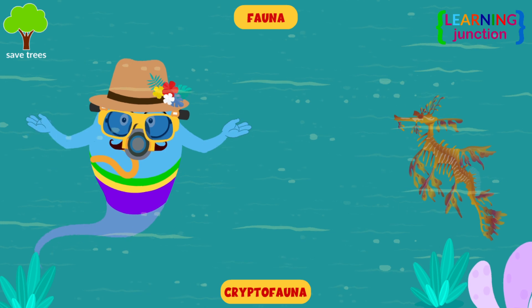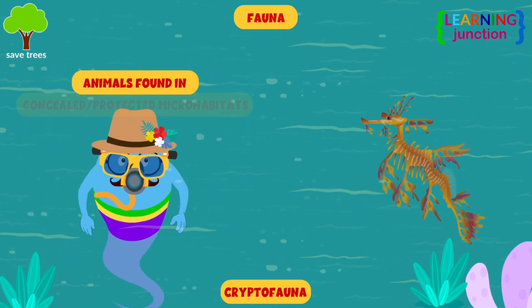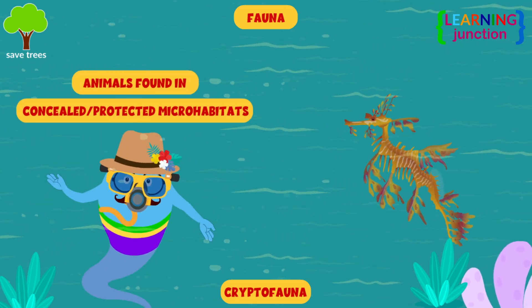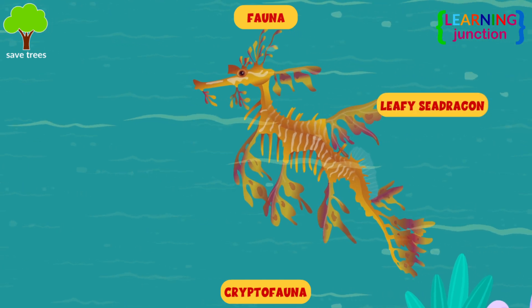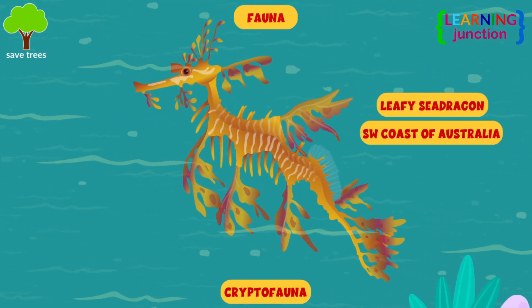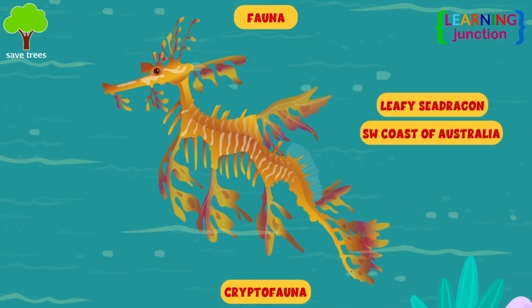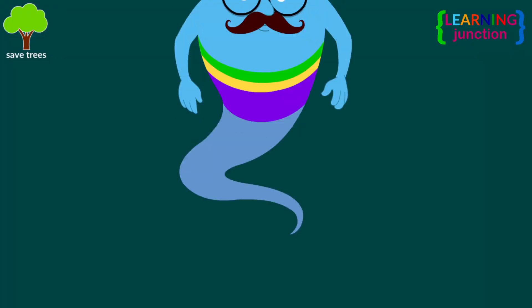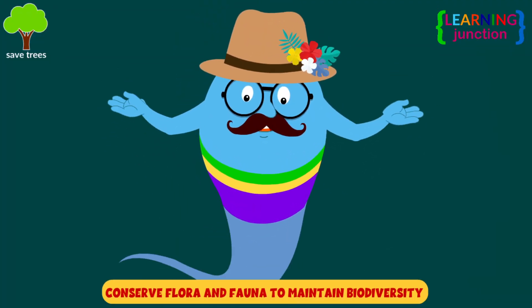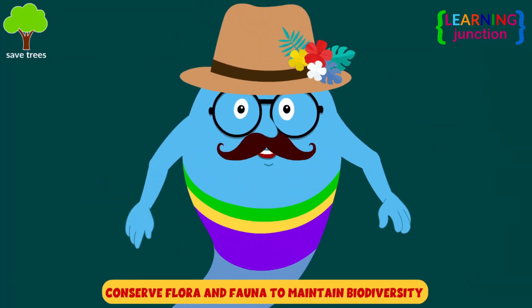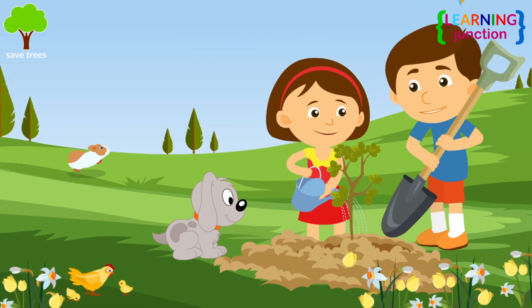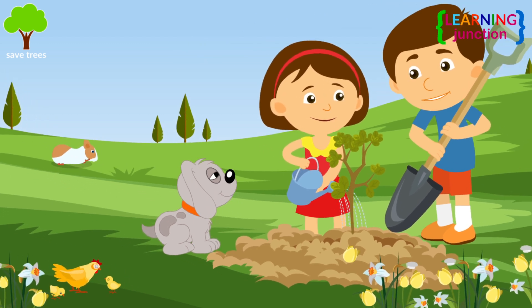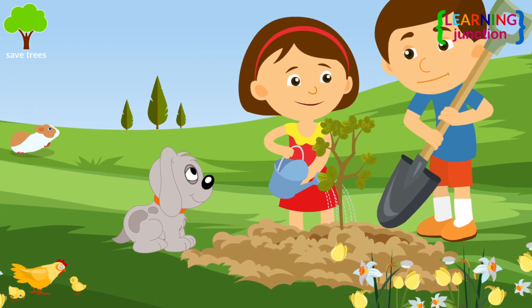Cryptofauna: it refers to those animals that are found in concealed or protected microhabitats. For example, leafy sea dragons are found along the southwestern coast of Australia. You should conserve flora and fauna to maintain biodiversity. The richness of biodiversity encourages that various types of plants and animals are balanced in a positive way in the environment.